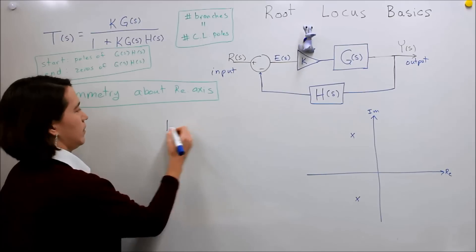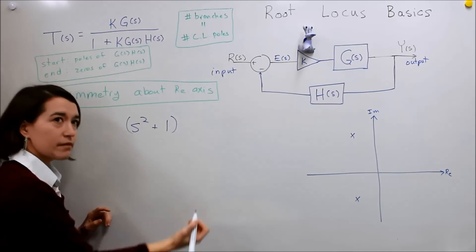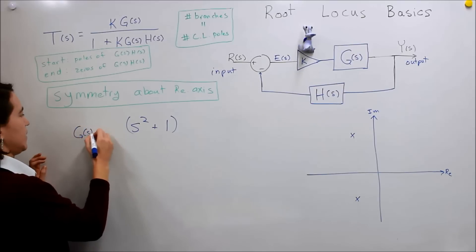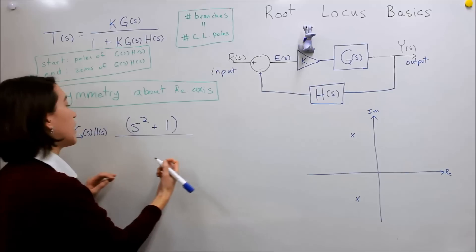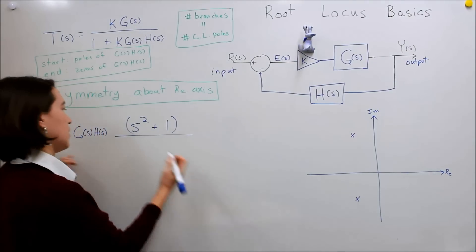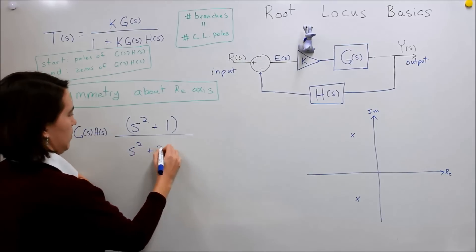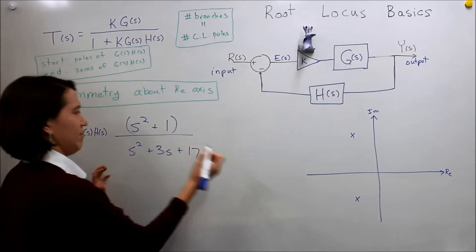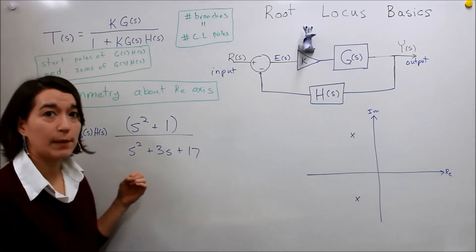For example, you might have something like S-squared plus one, or S-squared plus 3S plus 17 as your G(s)H(s). This could give an imaginary component, or you'll have some complex poles — but they're always going to come in pairs.